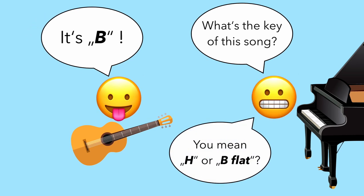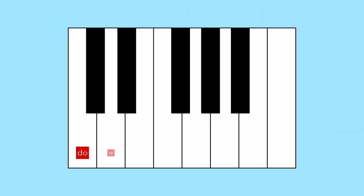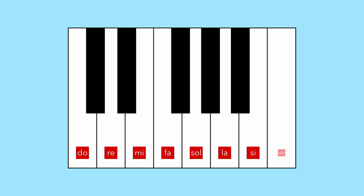In general, countries that speak Romance languages don't use letters of the alphabet, but rather syllables: Do, Re, Mi, Fa, Sol, La, Si, Do. A system called solmization.